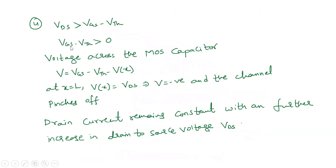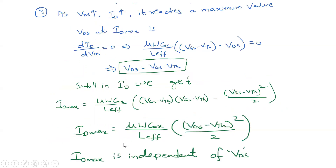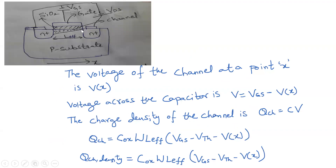When V_DS is greater than VGS minus Vth, the voltage across the capacitor, which is VGS minus Vth minus V(x), becomes negative at x = L_effective where V(x) = V_DS. This means the channel pinches off at the drain end — the channel no longer exists there and moves back toward the source. Because of pinch-off, the drain current remains constant with further increases in V_DS and cannot increase beyond that point.